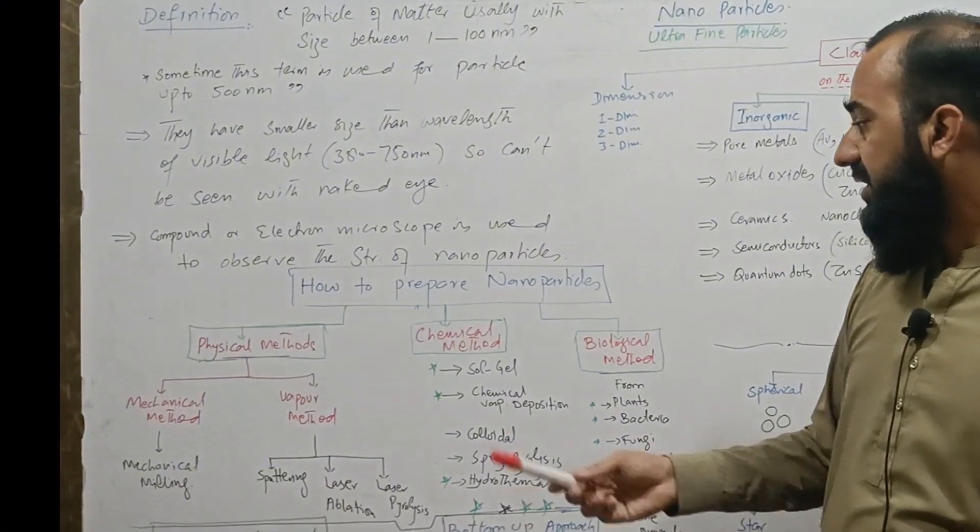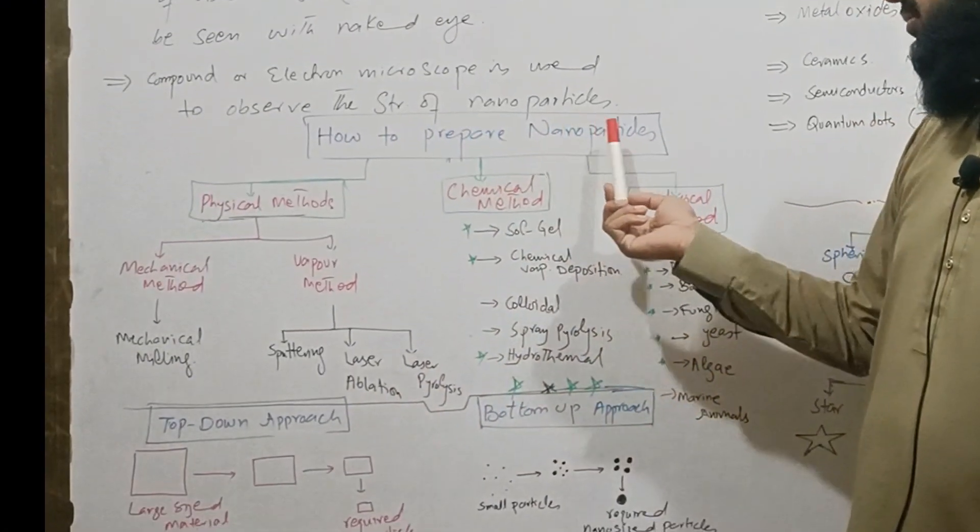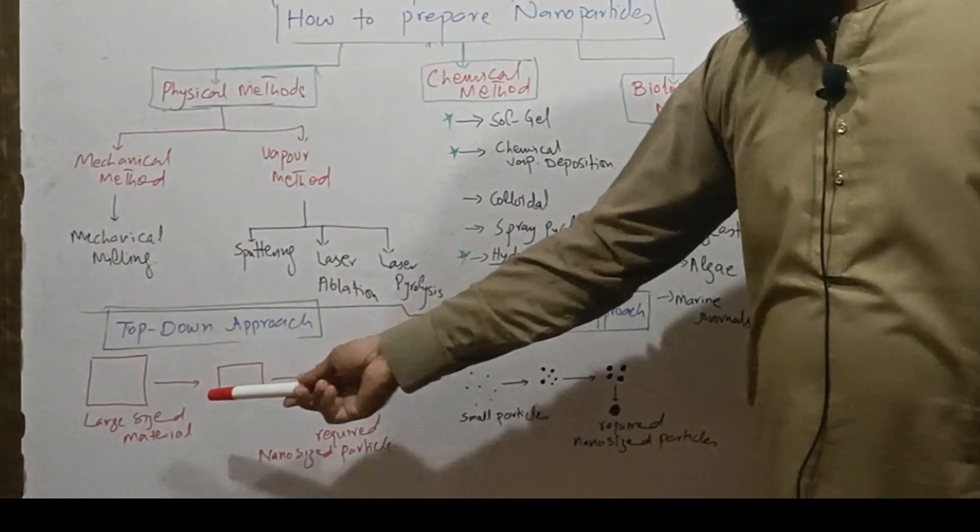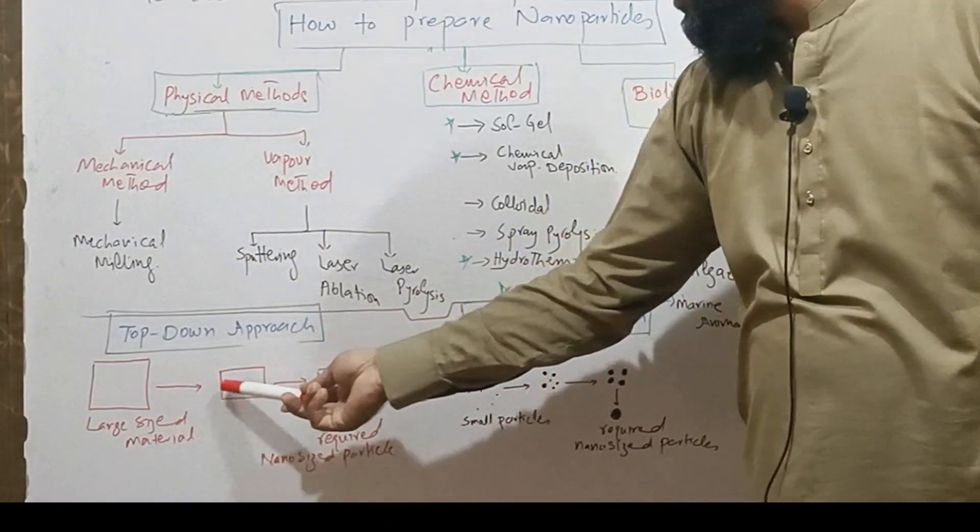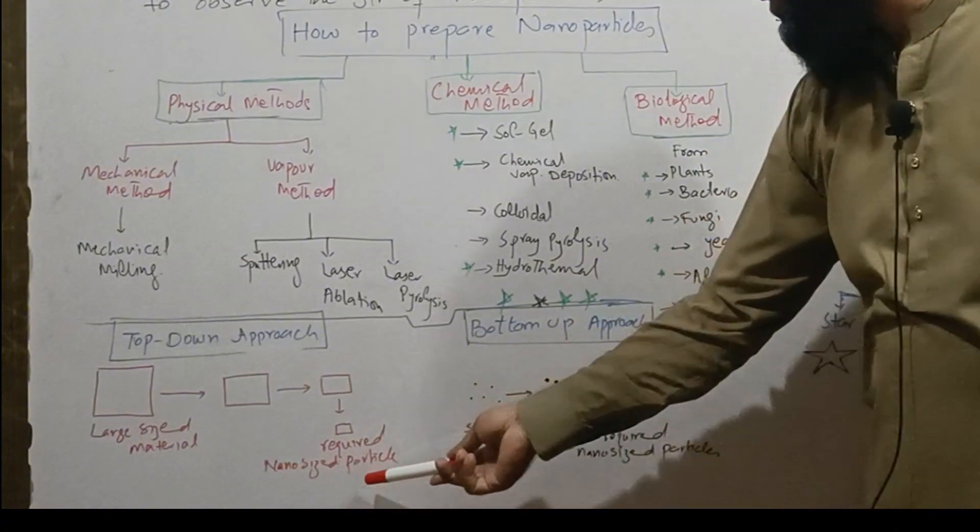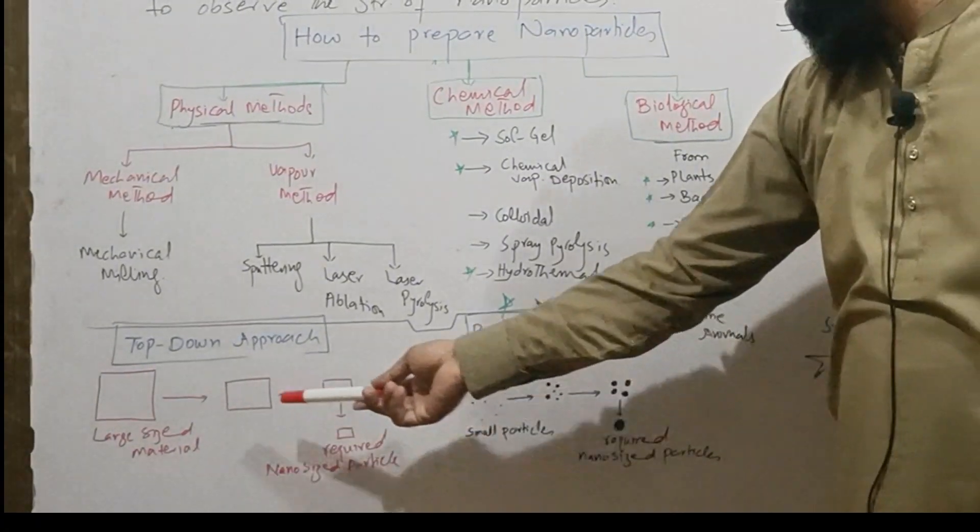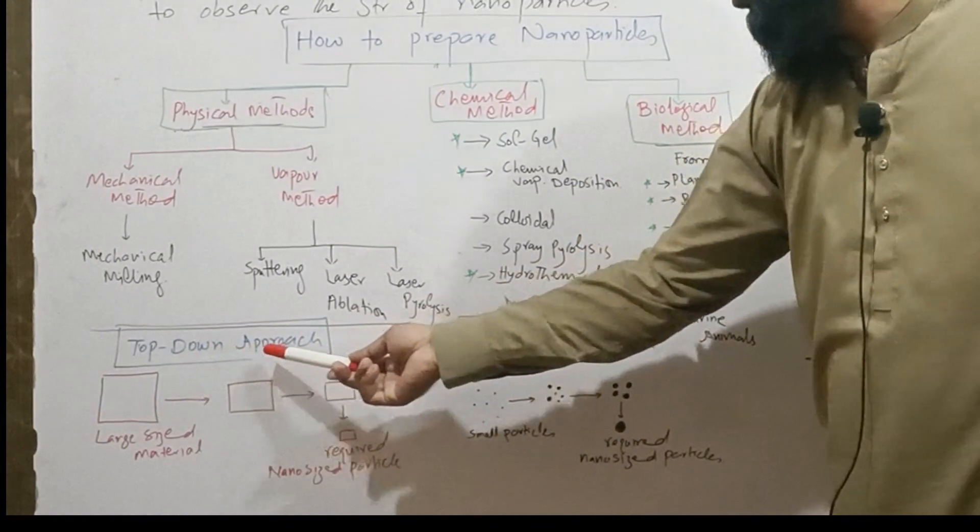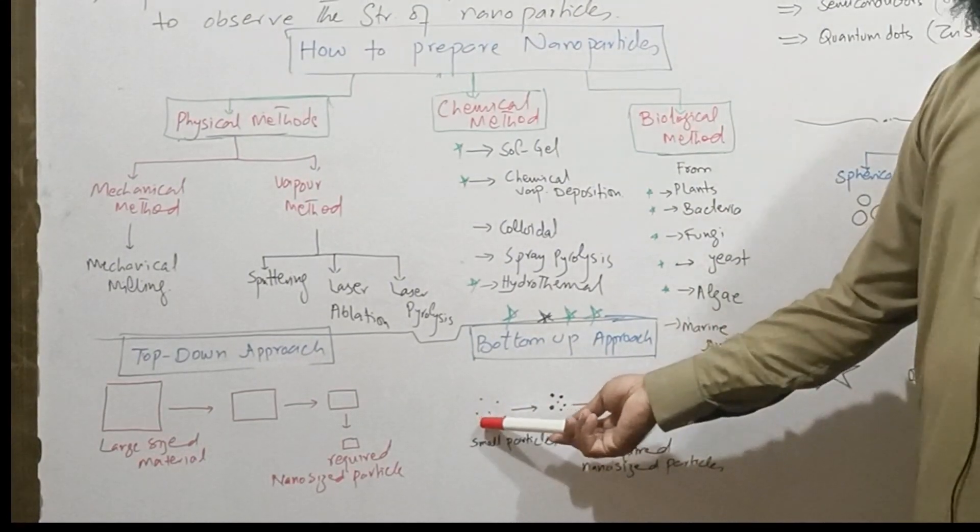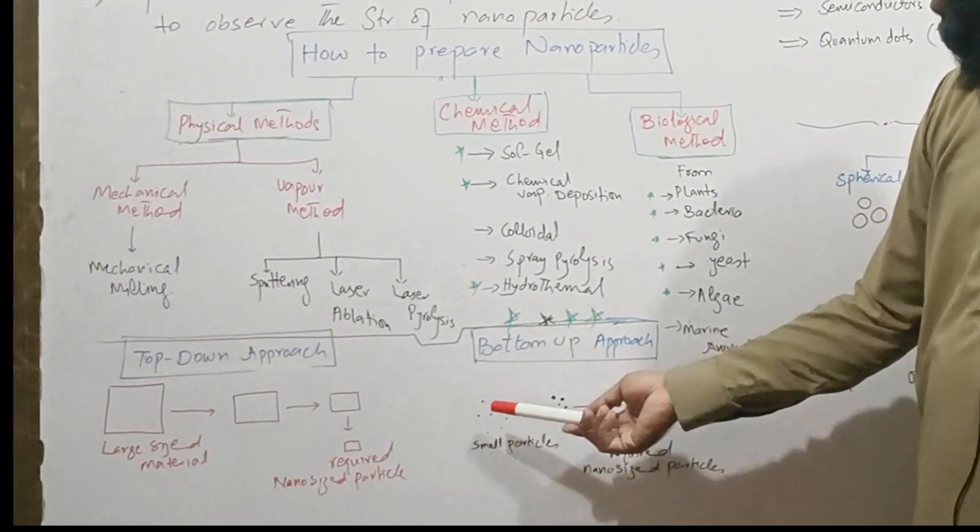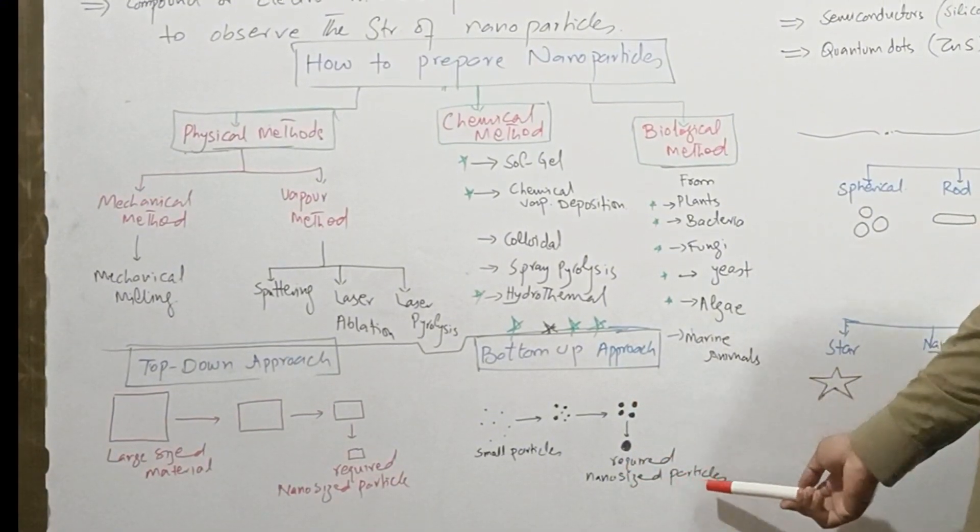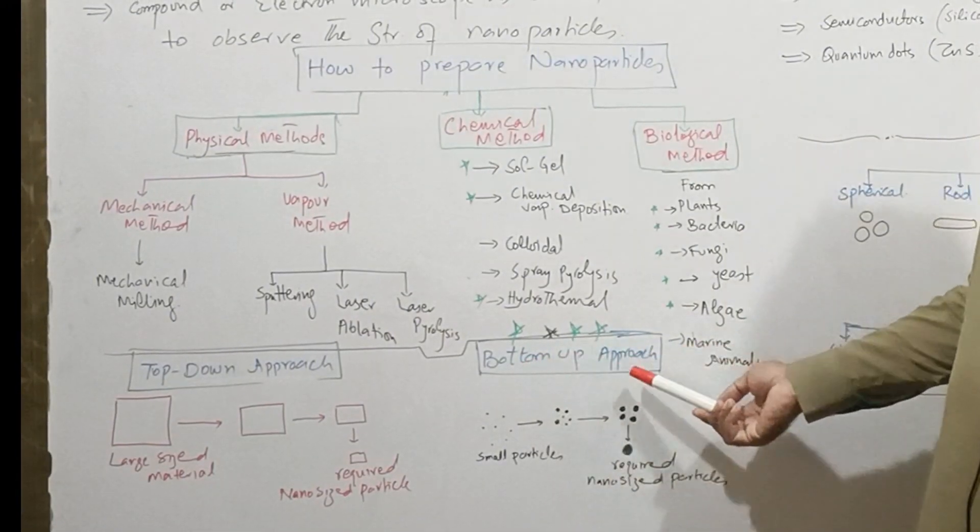First of all, let's see how we can prepare the nanoparticles. There are two approaches. First is top-down approach in which larger size material is used which is broken into smaller and smaller pieces until required nanosize particle structure is obtained. The other approach uses atomic size particles which are condensed or combined to form larger structures until required nanosize particle is obtained. This is called bottom-up approach.